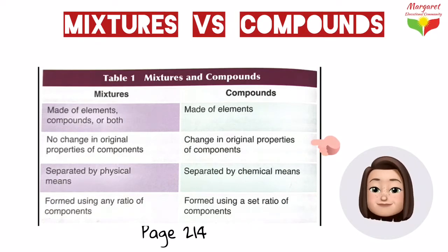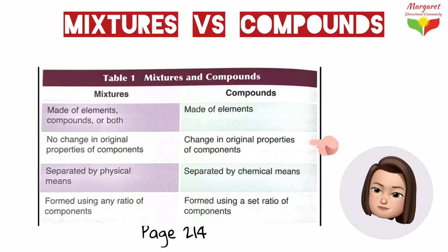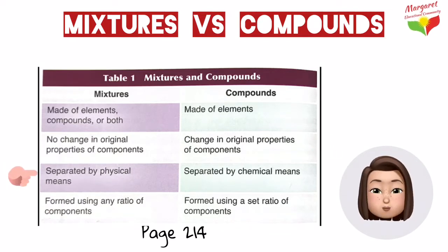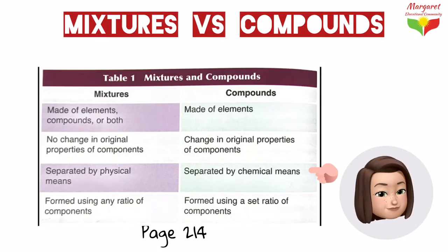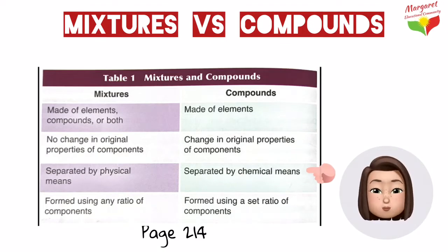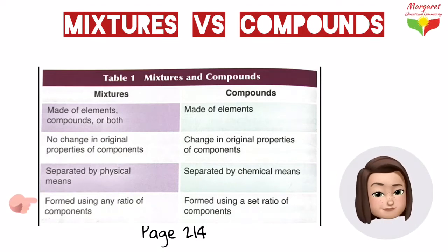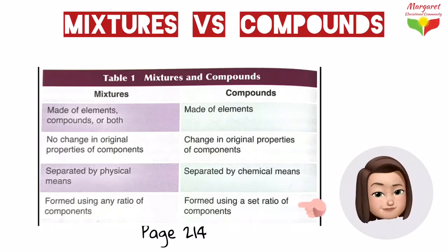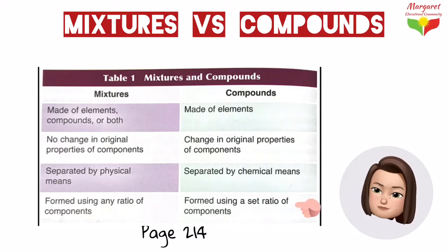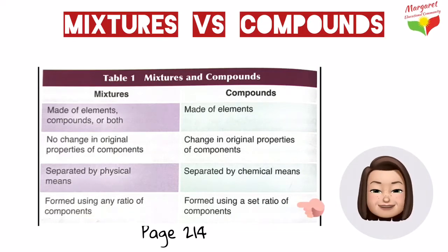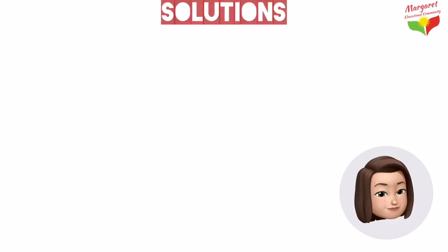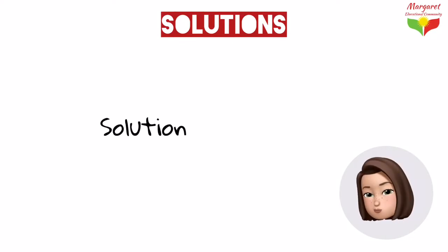This is because a chemical reaction happens in the compound. In a mixture, components are separated by physical means, whereas in a compound they must be separated by chemical means. The components can make a mixture in any ratio, whereas in a compound there must be a fixed ratio, otherwise the compound would not form.